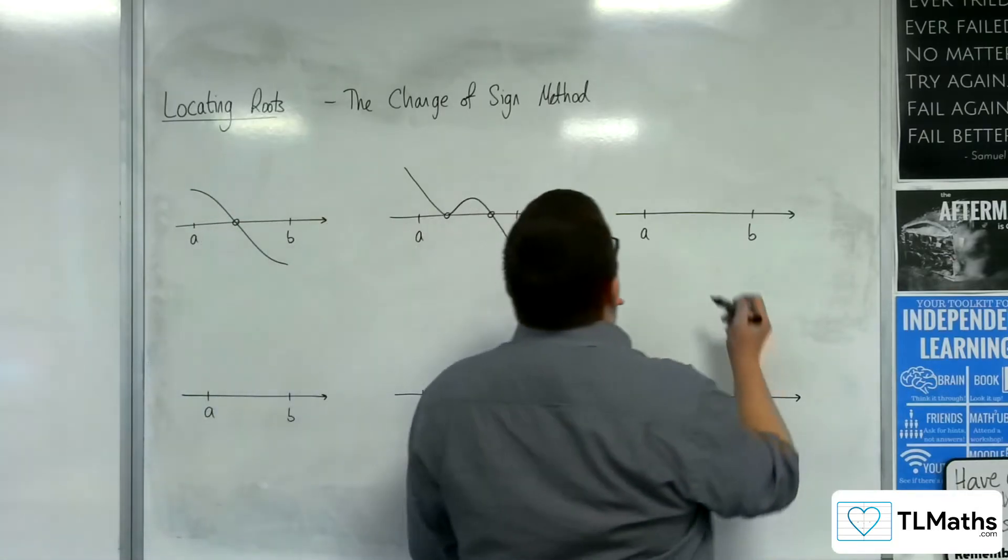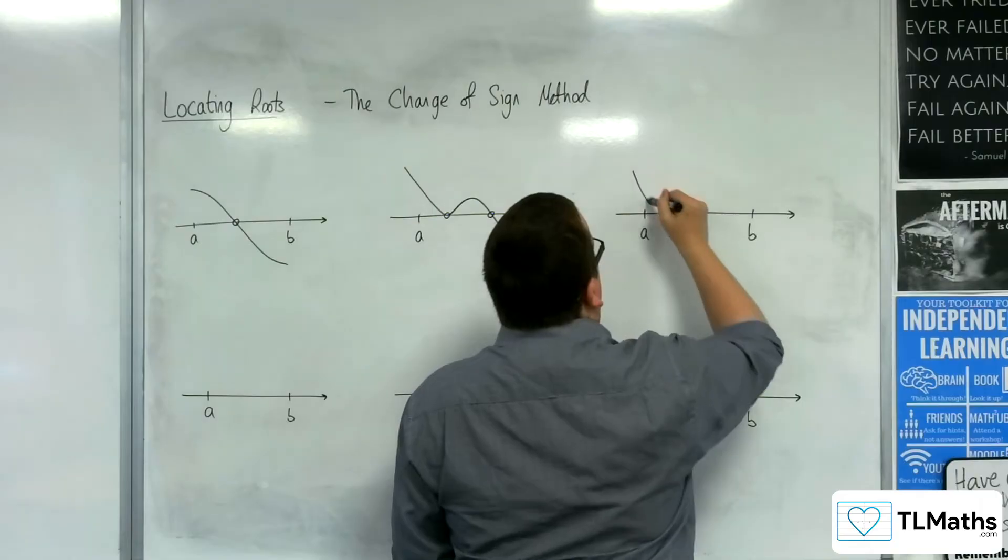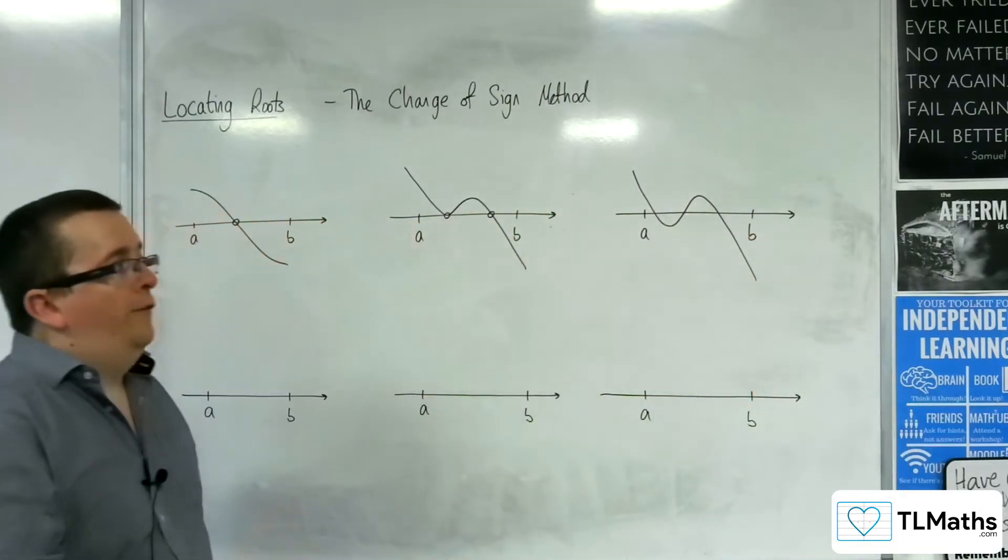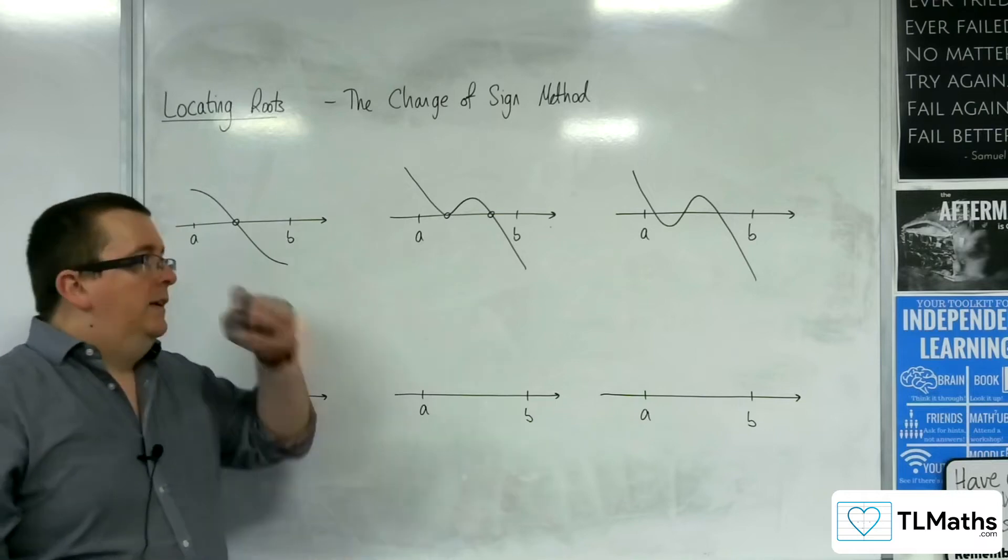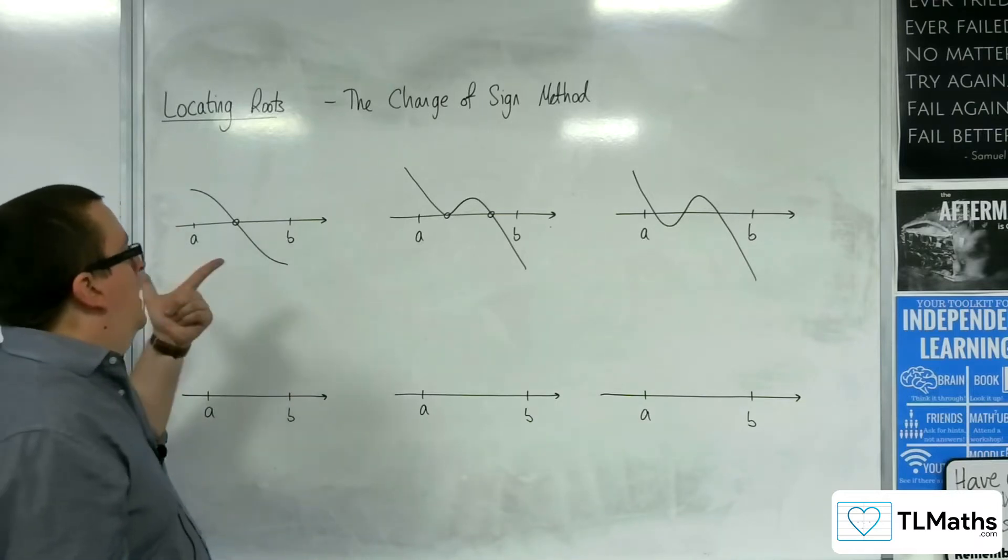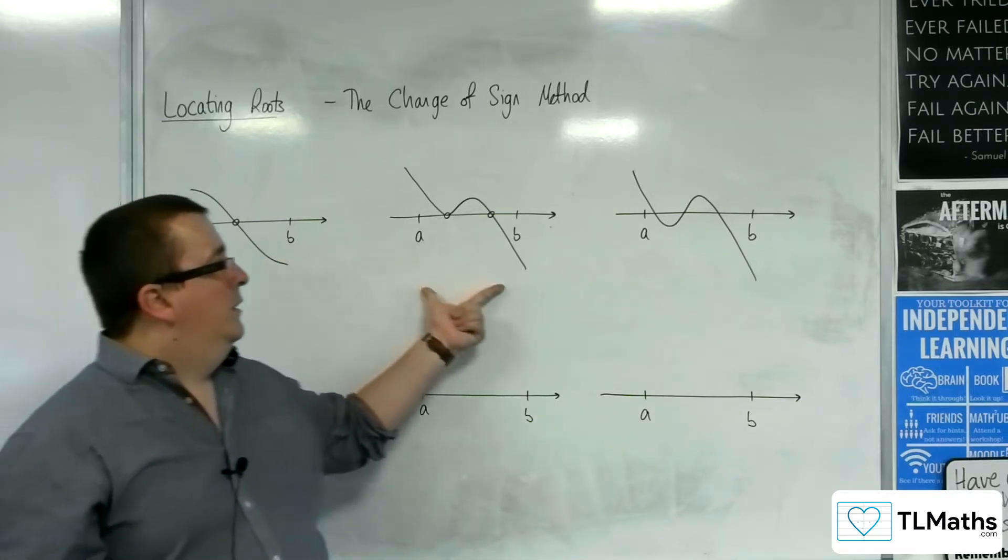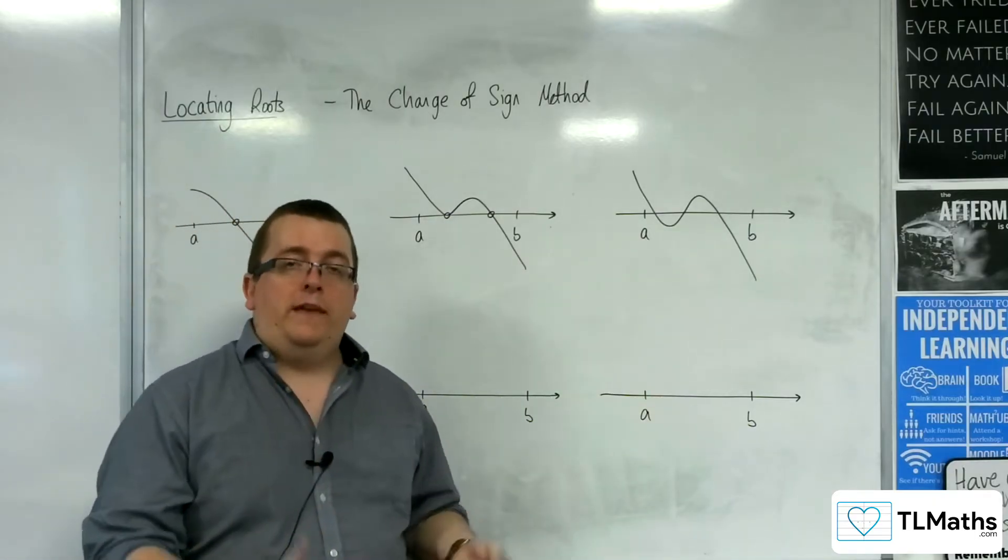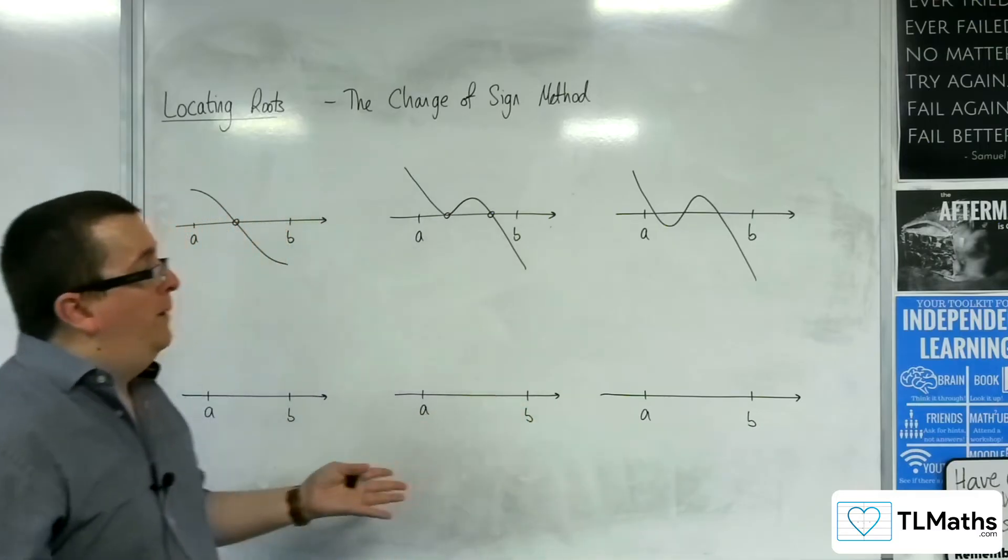So that means you could also have three roots. So one, two, three. Or you could have four or five or six or seven. So if the curve has a change of sign and is continuous, you will have at least one root. That's what I'm trying to explain.